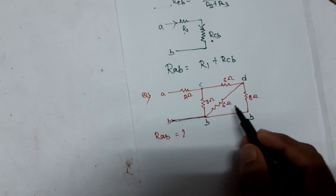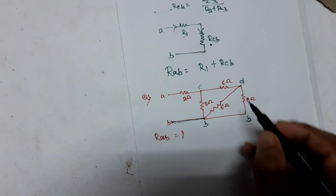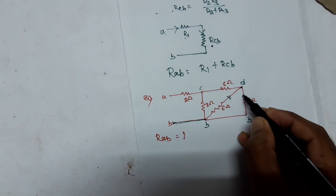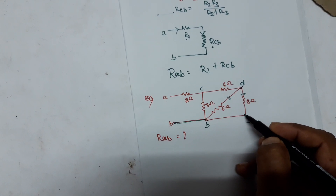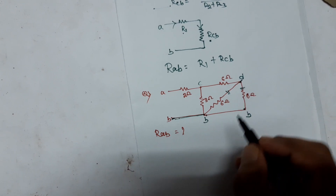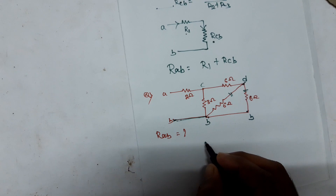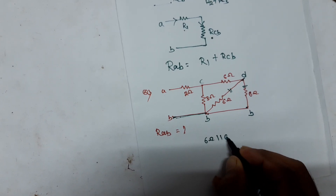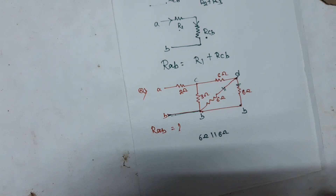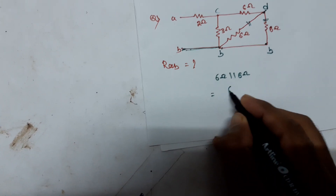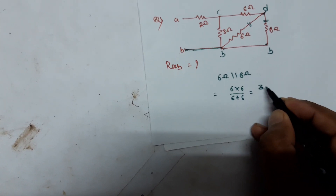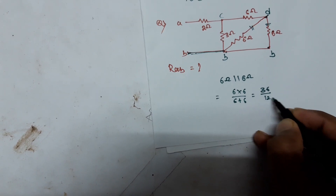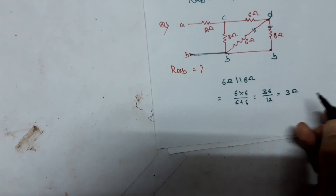First we check which resistors are between the same potential. The 6 ohm, 6 ohm, and 6 ohm resistors are all connected between nodes D and B — so they are all connected in parallel. We redraw the circuit: 6 ohm parallel with 6 ohm parallel with 6 ohm. Solving two of them: (6 × 6) / (6 + 6) = 36/12 = 3 ohm.